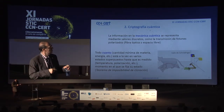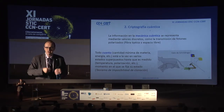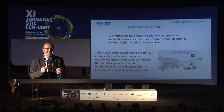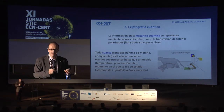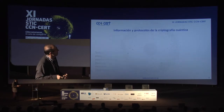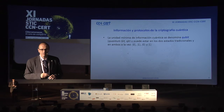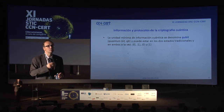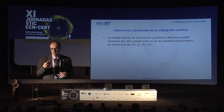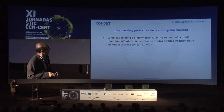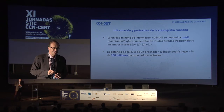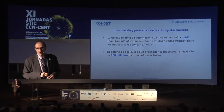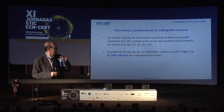El famoso gato de Schrödinger ilustra este principio: no se sabe si el gato está vivo o muerto hasta que se abre la puerta. Desde el punto de vista de la información cuántica, lo relevante es el qubit: ya no trabajaremos con bits —ceros y unos—, sino con quantum bits que pueden tener los estados 0, 1 o una superposición de ambos. El futuro ordenador cuántico se calcula que tendrá una capacidad equivalente a aproximadamente 100 millones de ordenadores actuales, lo que significa que la capacidad de computación crece de forma exponencial.